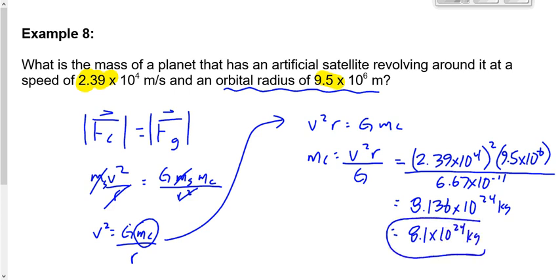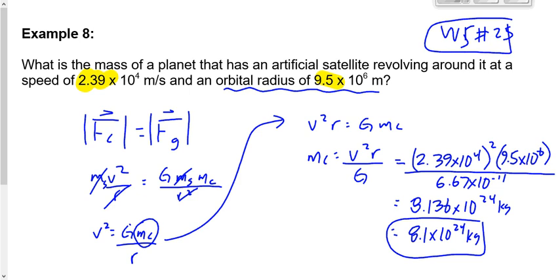This planet has a mass slightly bigger than Earth's — about 30% bigger, since Earth is 5.97×10²⁴ kg and this is 8.1×10²⁴ kg. Same order of magnitude, but larger. You'll work on the last worksheet of the unit, worksheet number 25, for the remainder of class.